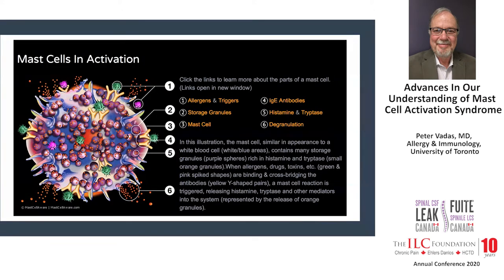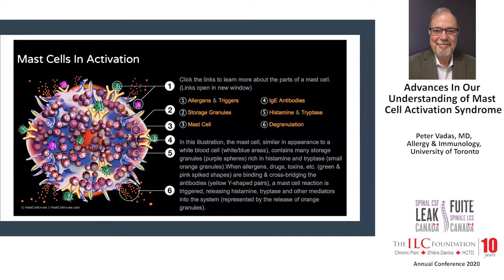Let's begin with a cartoon of what a mast cell looks like. It shows some of the characteristics of a mast cell. The mast cell is integral to causing allergic reactions. It's filled with chemicals called mediators because they mediate various manifestations of an allergic reaction, and those chemicals are stored in granules — those little round bubbles shown within the cell.